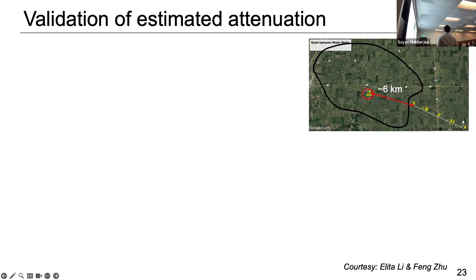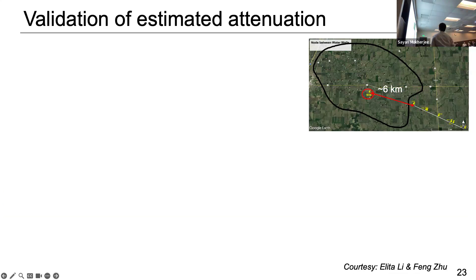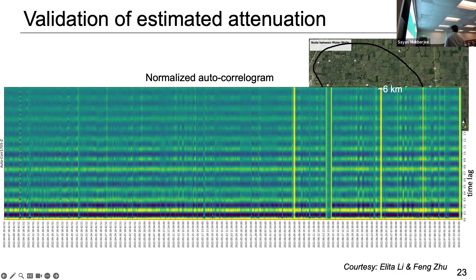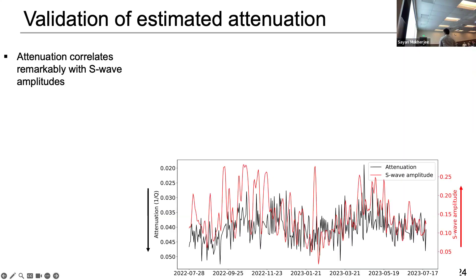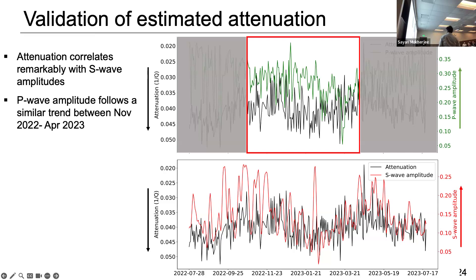We're also trying to validate our attenuation measurement because what we are seeing sometimes could just be noise. Using data measured by the node in the binary wind turbine group, Elita and Fong did analysis using normalized cross-correlation and taking the primary reflection from different components. They averaged the data and measured the P and S wave amplitude. When I compare the attenuation with the S wave amplitude, the attenuation follows the S wave amplitude very well — not surprising because the value of attenuation is predominantly S wave. But when we compared it with the P amplitude, it only matches in the range between November 2022 and April 2023; in other ranges there is anti-correlation.